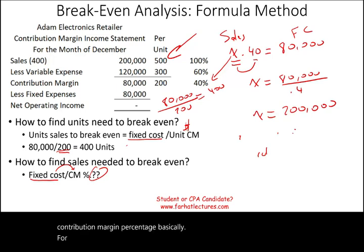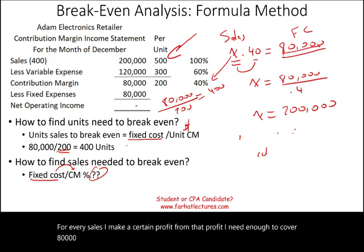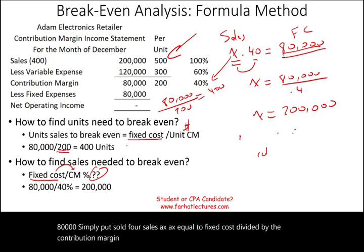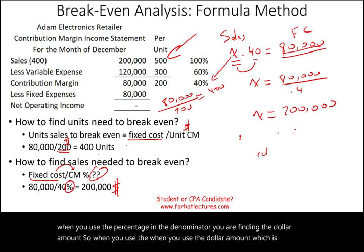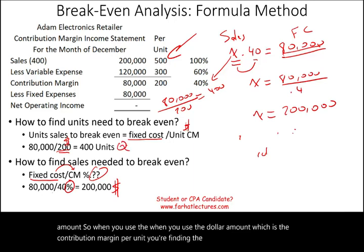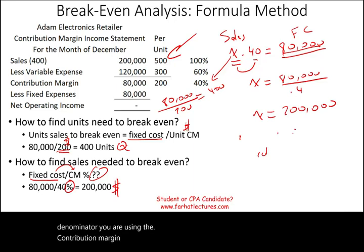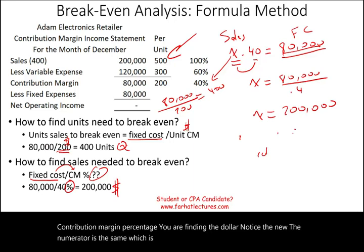For every dollar in sales, you make a certain profit. From that profit, you need enough to cover $80,000. So solve for sales: X equals fixed cost divided by the contribution margin percentage. When you use the CM percentage in the denominator, you find the dollar amount. When you use the CM per unit, you find the quantity. The numerator is the same — $80,000 fixed cost.